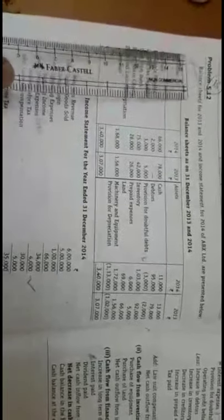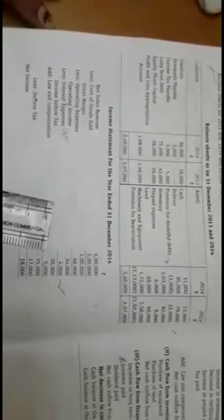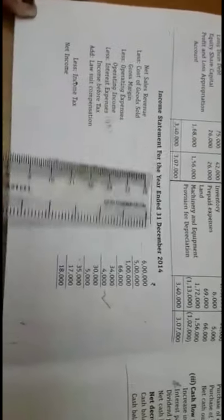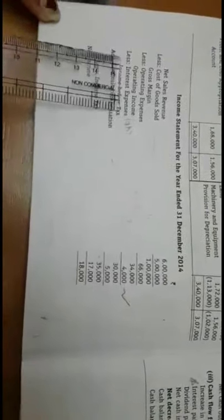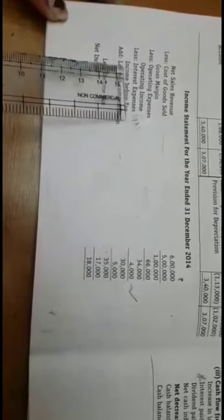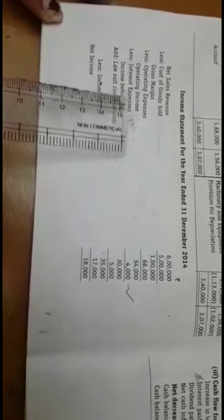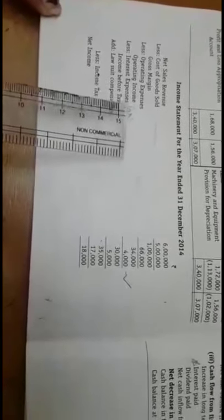I will be working out the 15th problem. Looking into the income statement given in this problem, we are not going to consider any item except interest expenses. This interest expense of Rs. 4,000 should be shown under financing activity and also under the head operating expenses.